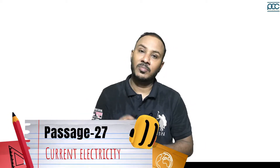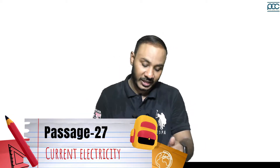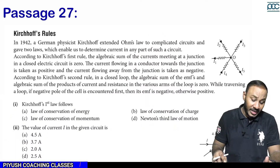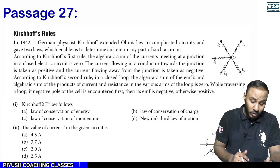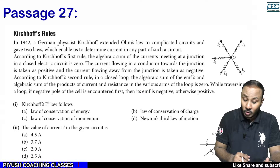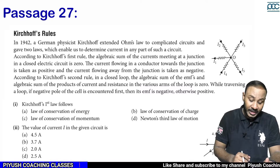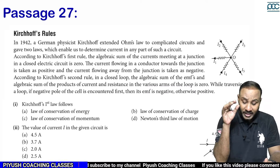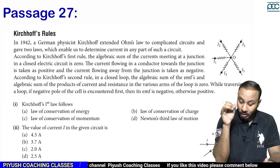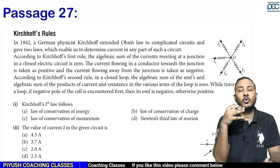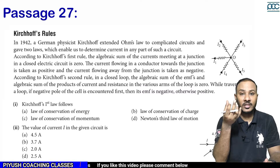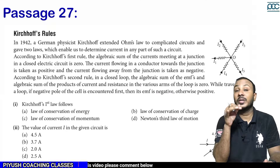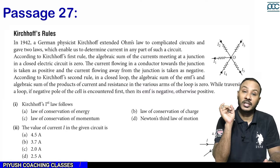Let's see what passage number 27 says. In 1842, German physicist Kirchhoff extended Ohm's law to complicated circuits and gave two laws, which enable us to determine the current in any part of a complicated circuit.